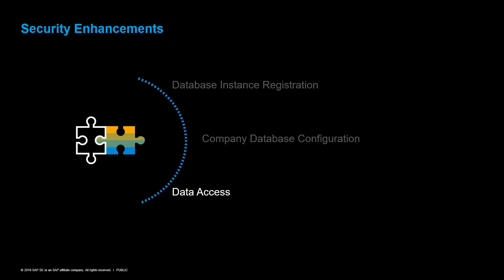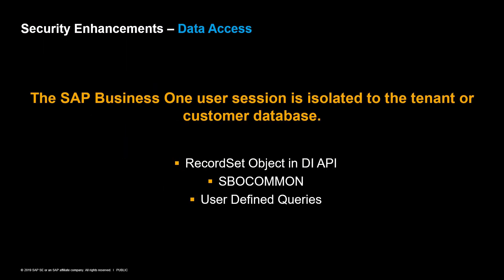The next chapter covers changes in data access. The SAP Business One user session is isolated to the tenant or customer database. The security enhancement impacts the following areas: the record set object in the DI API, the SBO common database access, and user-defined queries. It is no longer possible to use the record set object in SAP Business One DI API to manipulate data from another database.